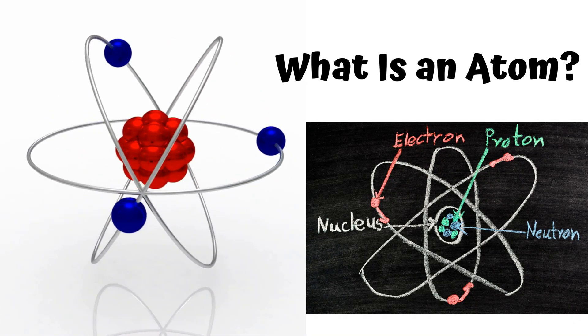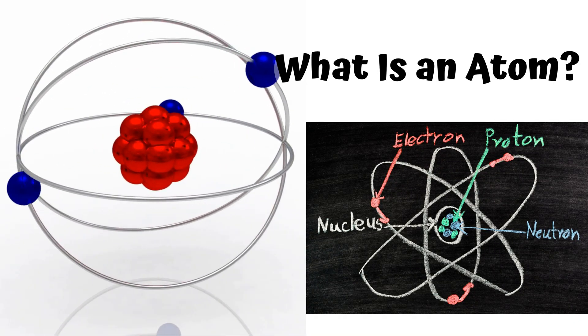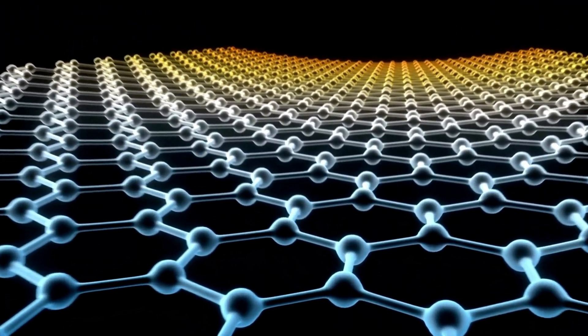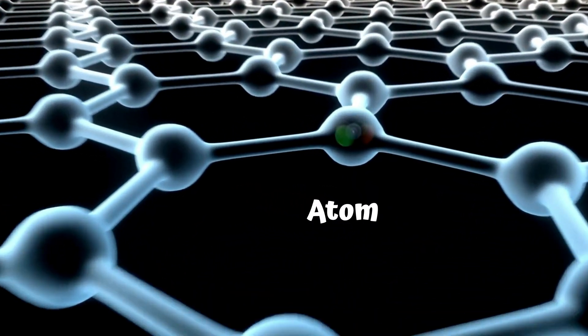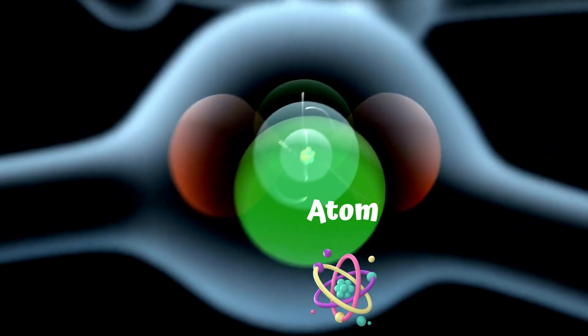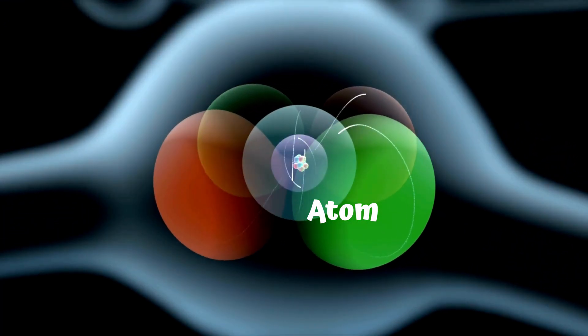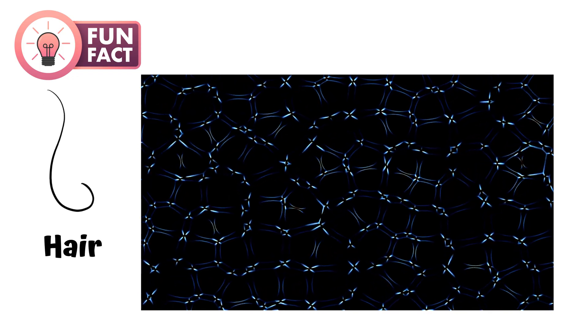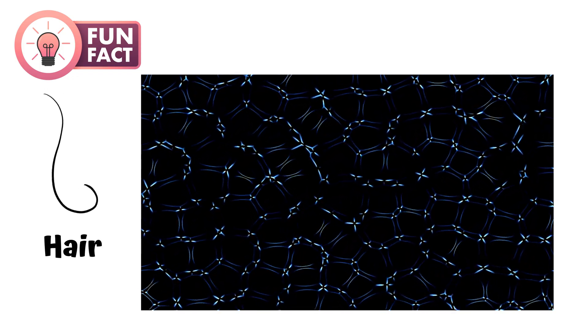Part 1. What is an atom? Let's start with the tiniest building block of the universe. It's called an atom. Atoms are super small particles that make up everything. Yes, everything you can see, touch, eat, and even breathe is made of atoms. Fun fact. A single strand of hair is a million atoms wide.